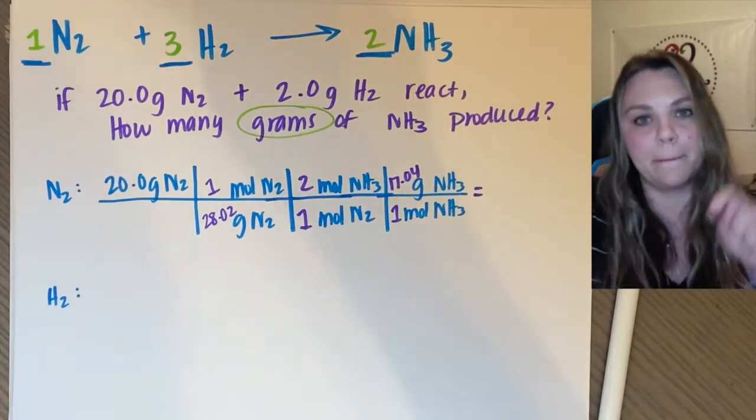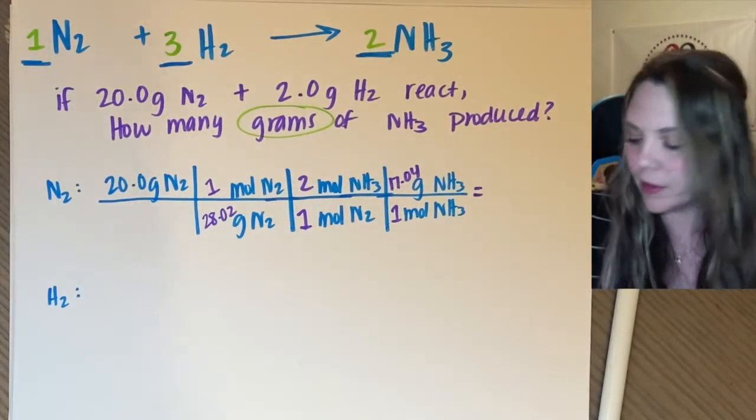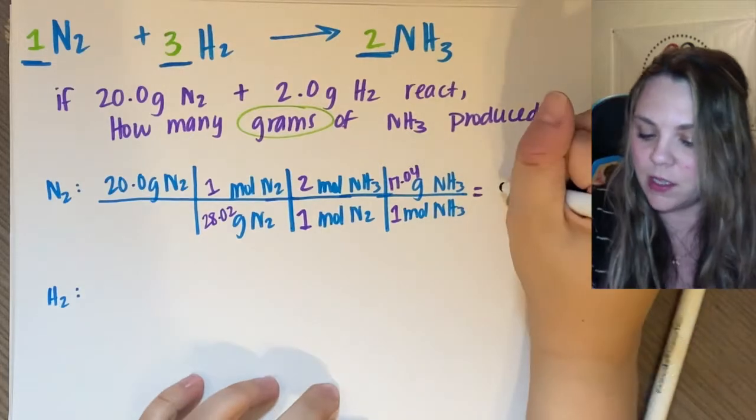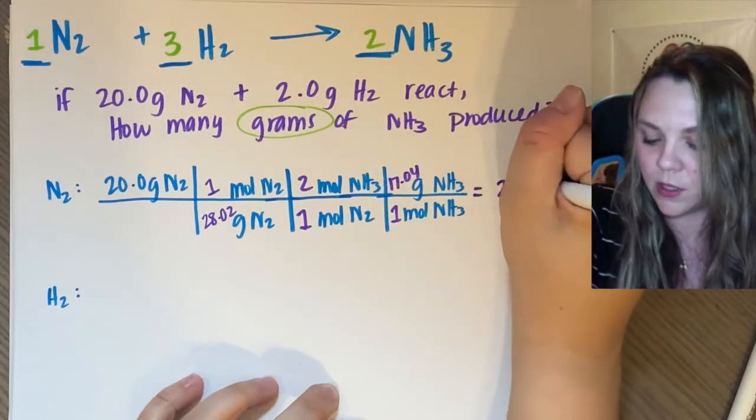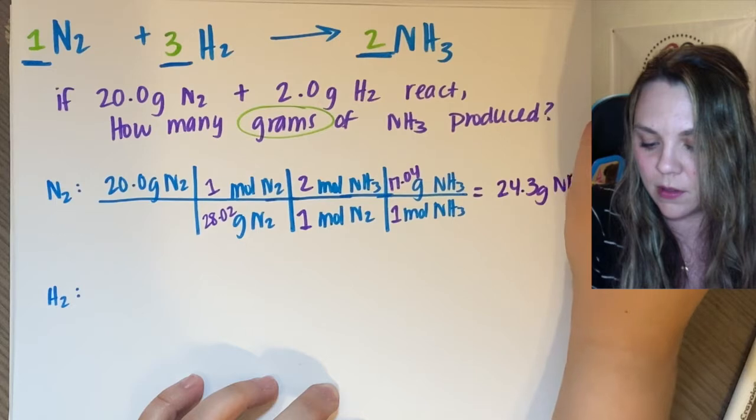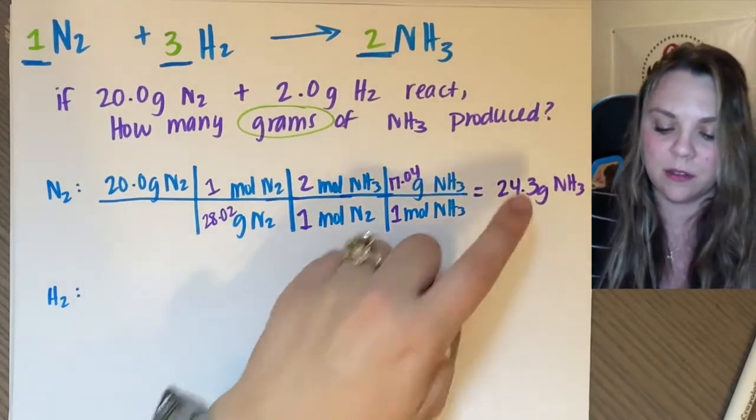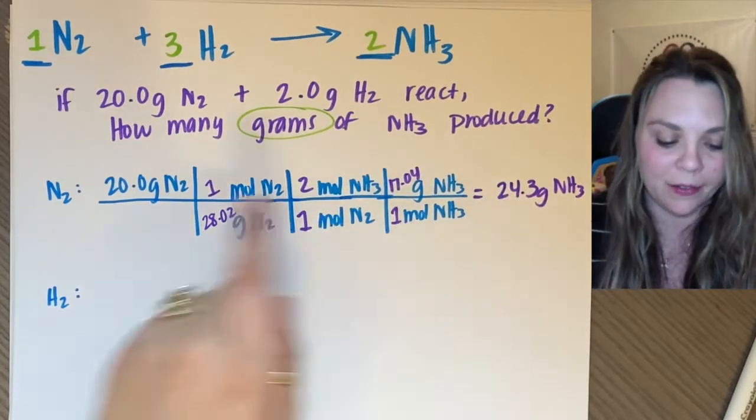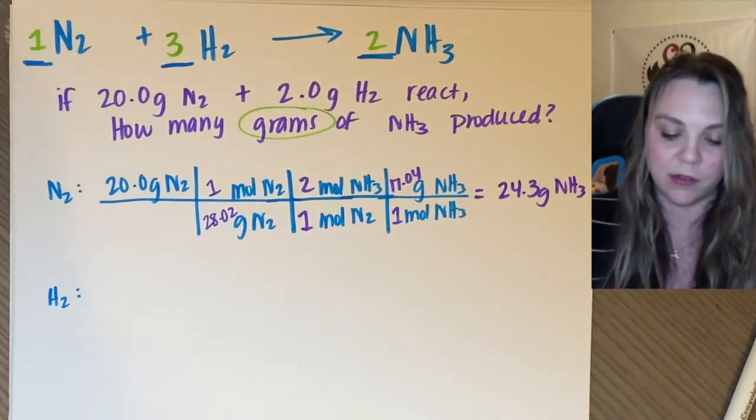And then in your calculator. And you get an answer of 24.3 grams of NH3. Well, I'm not done yet. I've only done half of my limiting reactant problem.